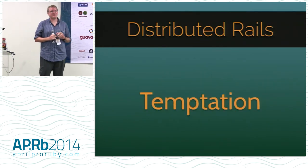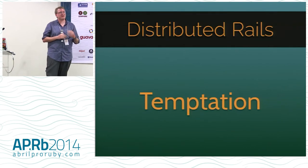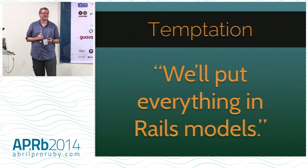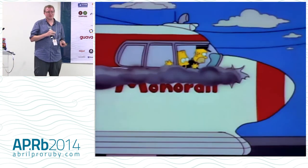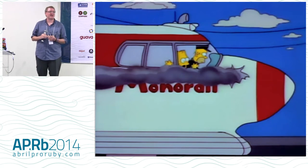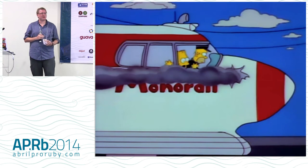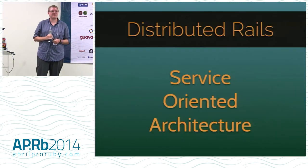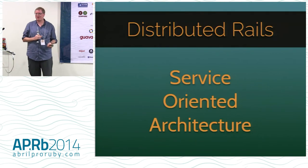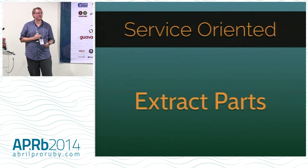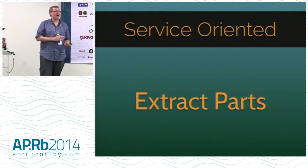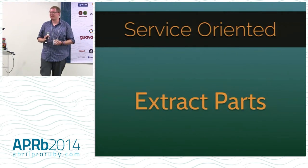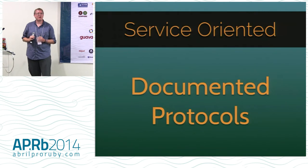There's a temptation to build all your rules, business logic, and validations right into your Rails models. This pattern is called monorail, and the problem is you end up with more and more code in your Rails app, it gets harder to work with, and you have a lot of coupling between models. The cure is a service oriented architecture — building lots of small services that do one thing. You extract parts from your monolithic monorail application and put them in separate apps with the one data store they need, the business logic, and an exposed documented protocol for how other apps interact with it.